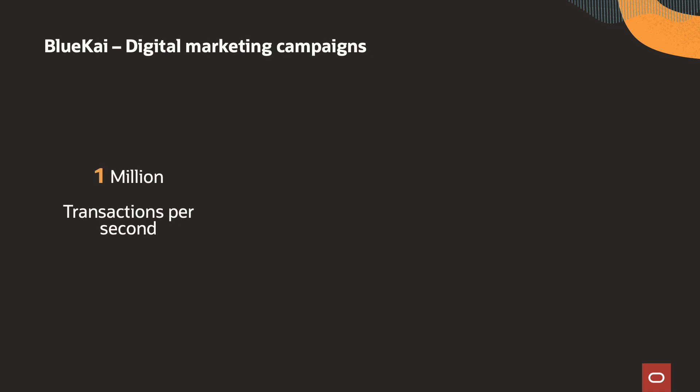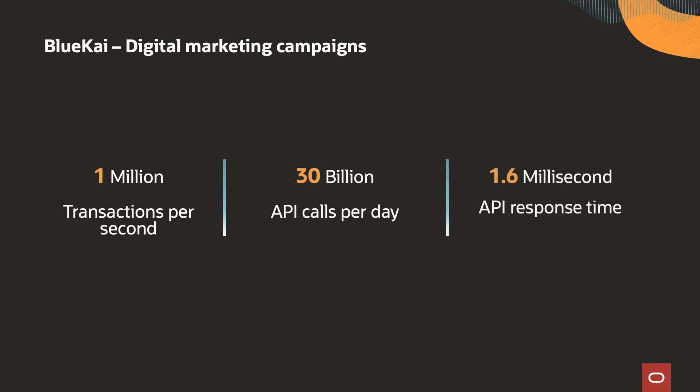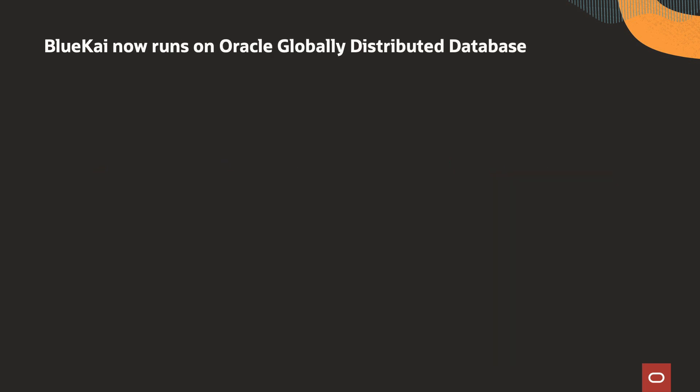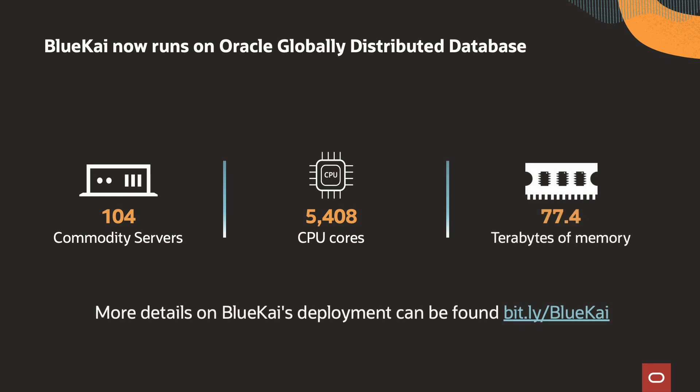Now let's look at a second example. Blue Kai is a leading data platform for digital marketing campaigns, accessed in real time by hundreds of millions of consumers as they surf the internet. Blue Kai is a hyperscale workload on a multi-petabyte database that requires near-instant response time. It runs 1 million transactions per second, 30 billion API calls per day, and achieves 1.6 millisecond API response time. Blue Kai now runs on Oracle Globally Distributed Database, on 104 commodity servers, 5,400 CPU cores, and 77 terabytes of data.